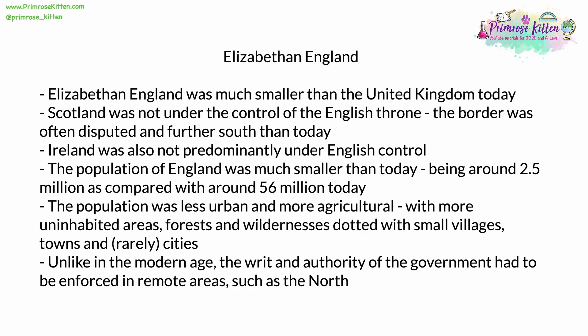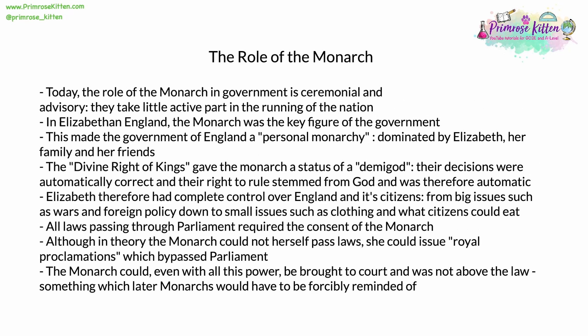Unlike in the modern age, the writ and authority of the government had to be forcibly enforced, especially in remote areas such as the North and Wales. The United Kingdom today is a constitutional monarchy — the role of the monarch is ceremonial and advisory. This was very different in the Elizabethan age, where the monarch was the central key figure of the government and the personification of the government herself. A key concept was the divine right of kings, which officially gave the monarch the status of a demigod — their decisions were automatically correct, and their right to rule stemmed from God, and was therefore automatic and unchallengeable.